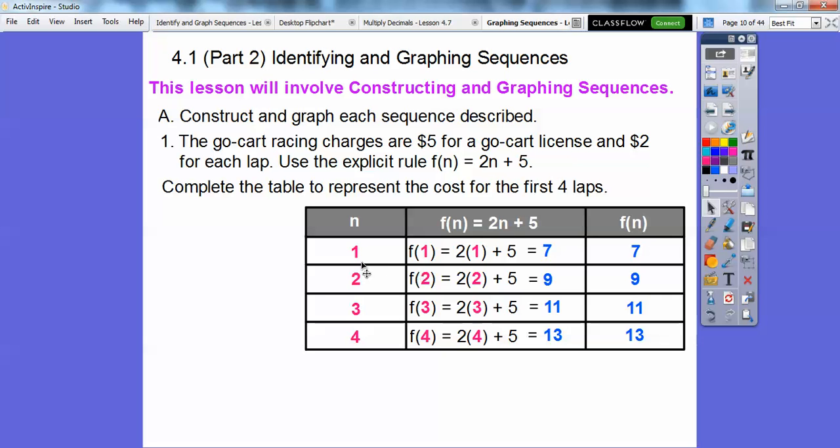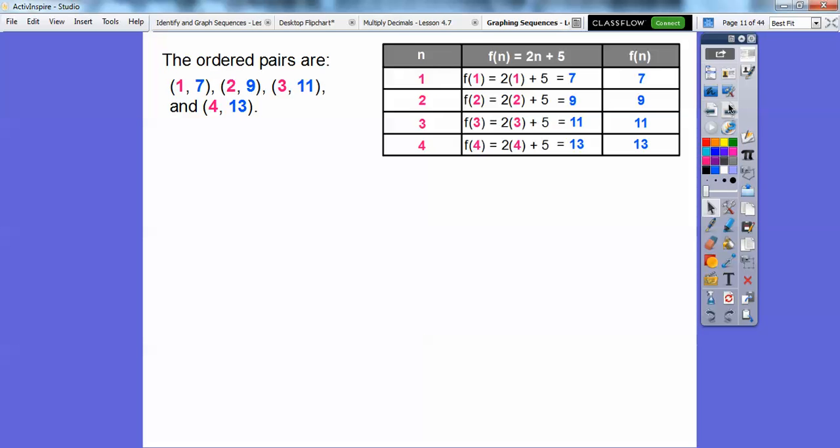Now when we graph these, these are our inputs, so these are our x values. These are our output, these are our y values. So I get the ordered pair 1, 7, then 2, 9, then 3, 11, and then finally 4, 13. So those are all the ordered pairs that we're going to get.